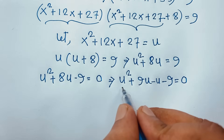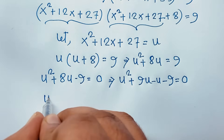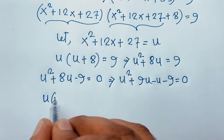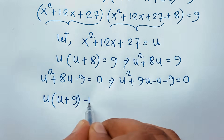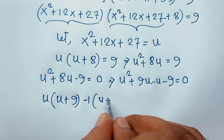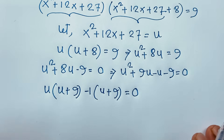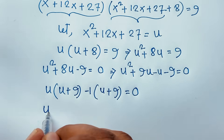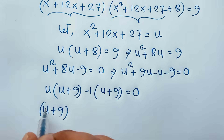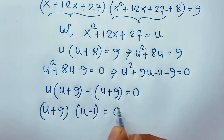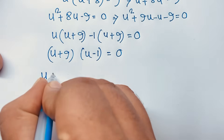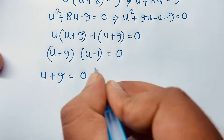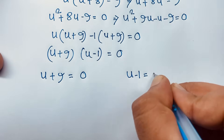Taking u common from the first pair: u(u + 9), and -1 common from the second pair: -1(u + 9) = 0. So (u + 9)(u - 1) = 0. This gives two cases: u + 9 = 0, or u - 1 = 0.